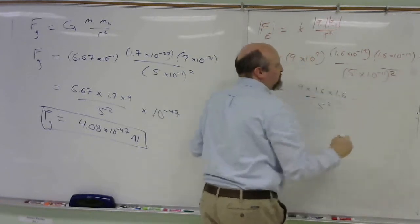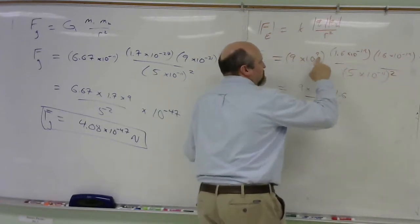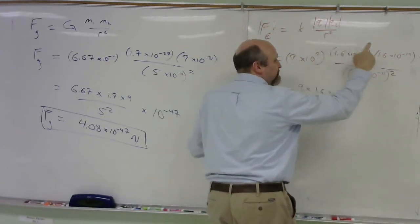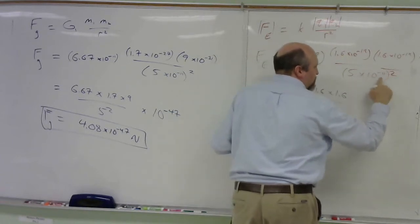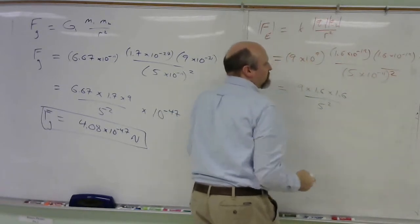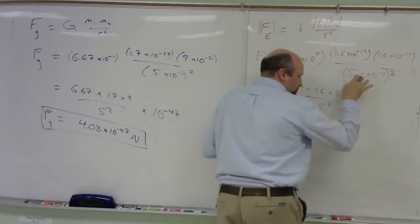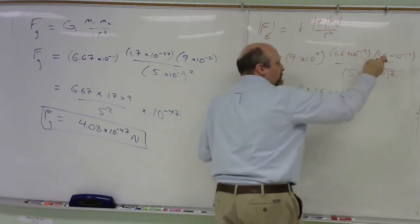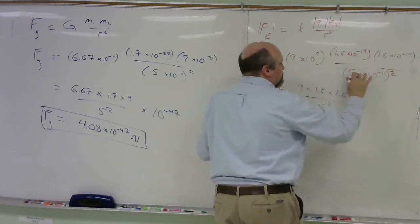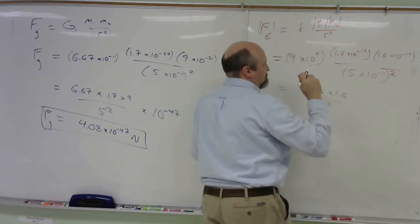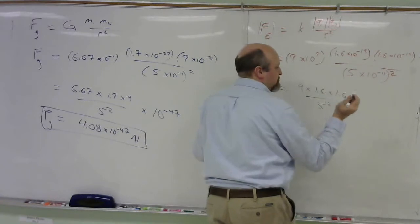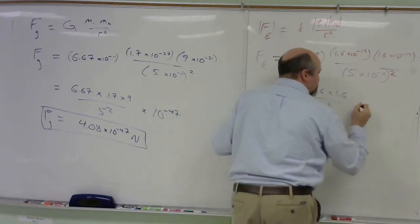And then my powers of 10, negative 19, negative 19, that would be negative 38 times a positive 9, that would be negative 29 divided by negative 22. So negative 29 divided by negative 22. That would be, when I divide, I'll have to flip the sign. And so I'll be adding 22 to the negative 29. So you say negative 29 plus 22 is negative 7.